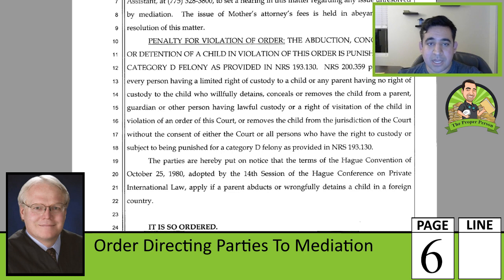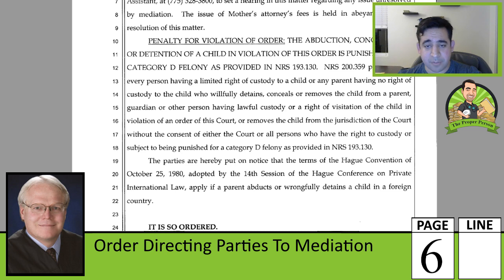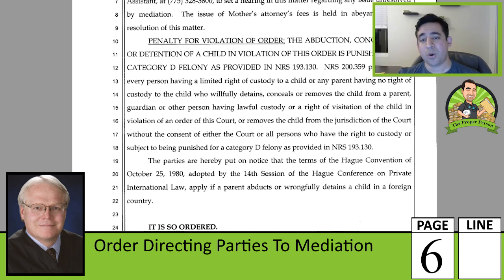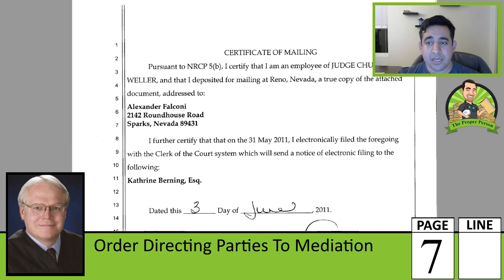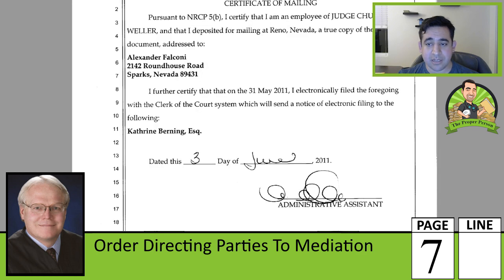Here is the boilerplate penalty for violation of court order — the language about not detaining, concealing, or moving a child from the custody of a parent. This boilerplate language is included in every single order entered by the family court and is required by law. The certificate of mailing indicates the judge mailed this document to me at my address and apparently e-served it to my ex's attorney.